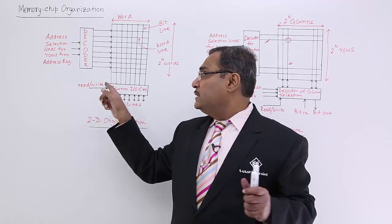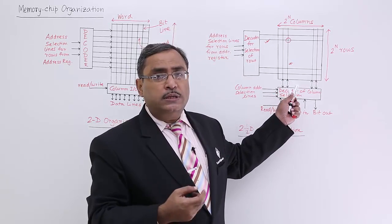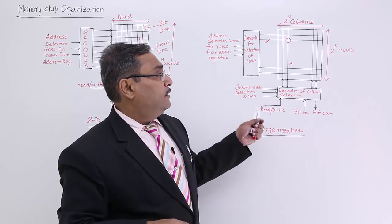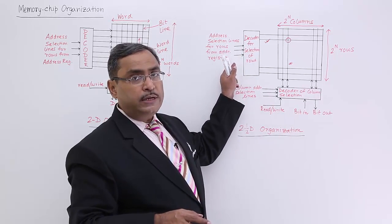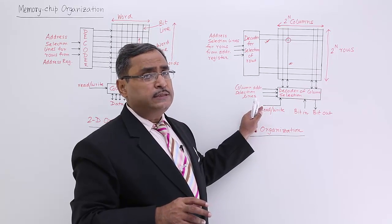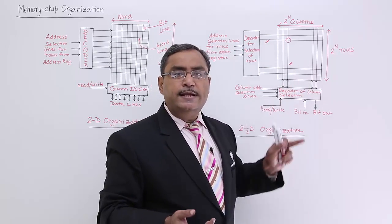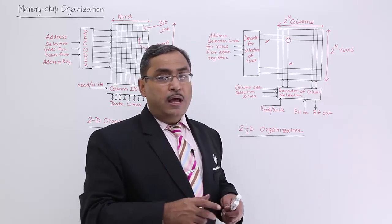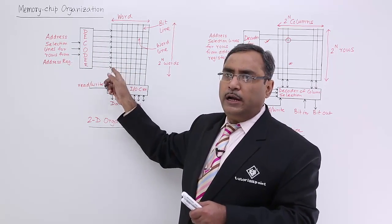Now let us compare the two organizations. In 2D, the number of column output lines is fixed in hardware. In 2.5D, the full address bits are divided into two parts — some bits go to the row decoder and some to the column decoder. For example, with a 6-bit address, 3 bits give 8 rows and 3 bits give 8 columns, yielding 64 junction points. In 2D, all 6 bits go to one decoder, producing 64 horizontal output lines, requiring more complicated hardware.